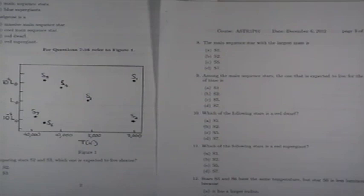Here, the answer is A, sorry, B, S3 is going to live for the shorter period of time. Then, question eight, the main sequence star with the largest mass is which one of these?